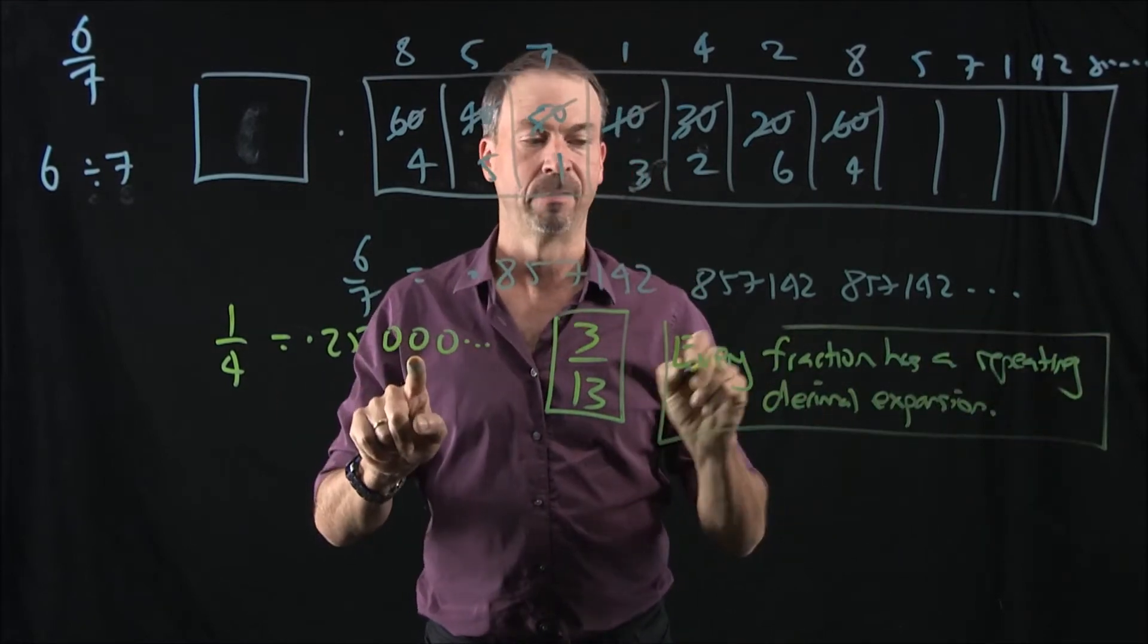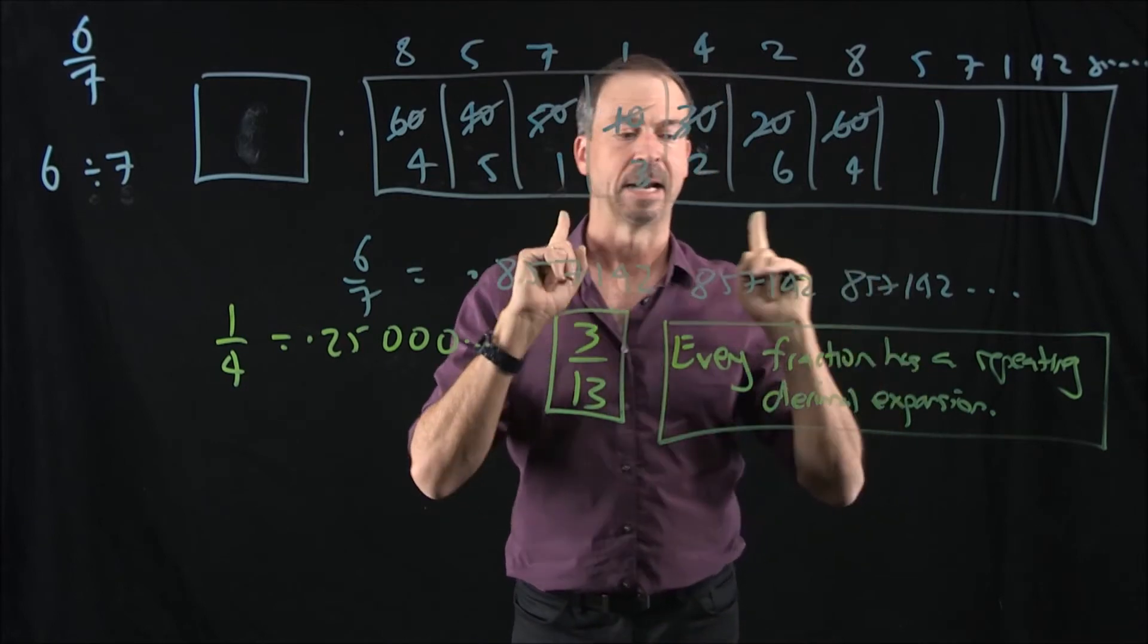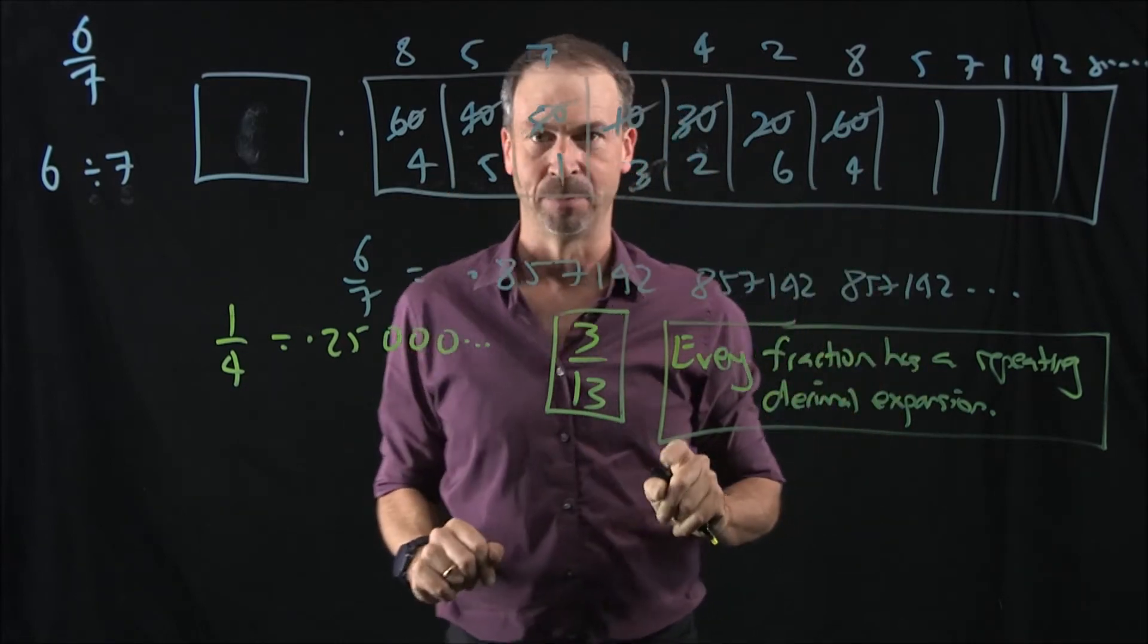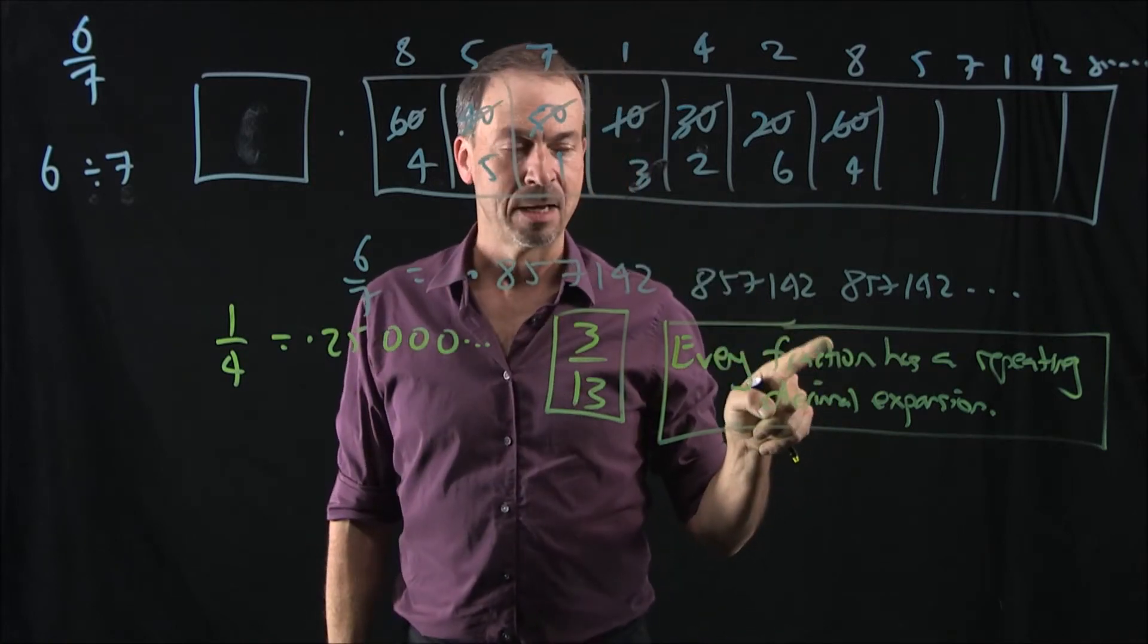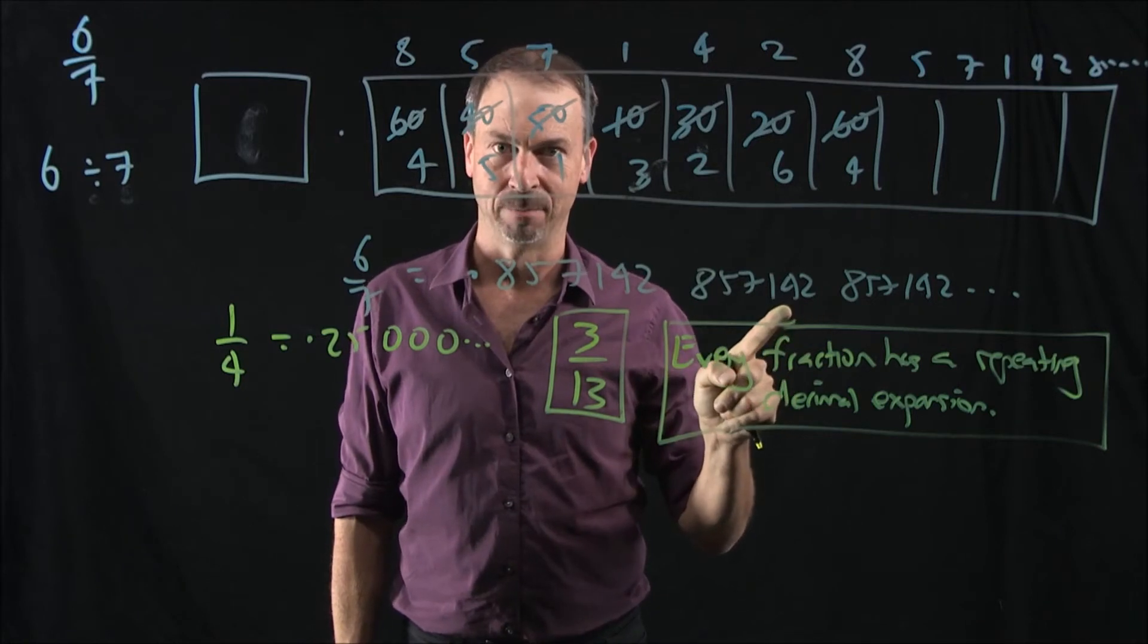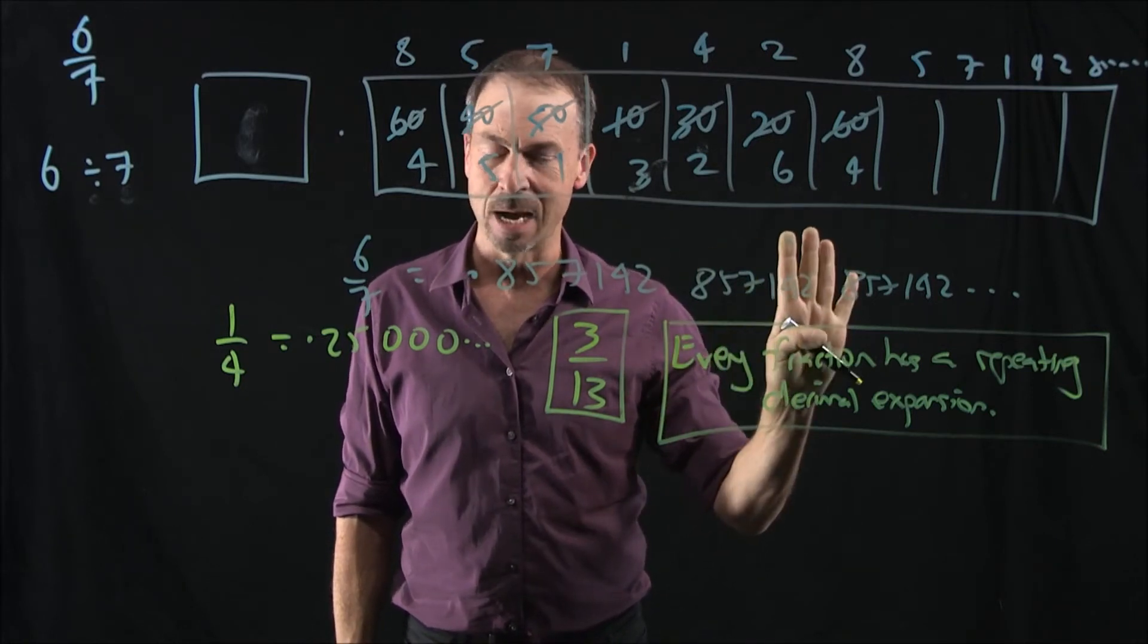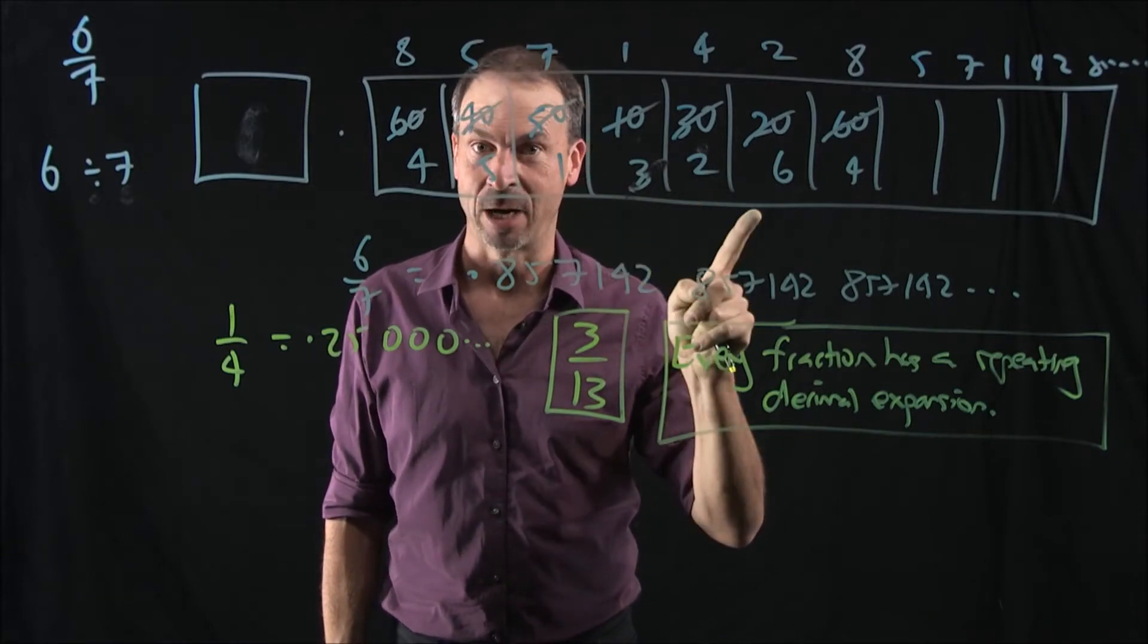All right, it could be repeating zeros, like a quarter, or a half, or an eighth, or something, or it could be repeating blocks like this, but it has a repeating decimal expansion. This is deep, because what it says now, suppose I gave you a decimal that didn't have a repeating decimal expansion, did not have a repeating pattern of any kind. Then that means that number cannot be a fraction.